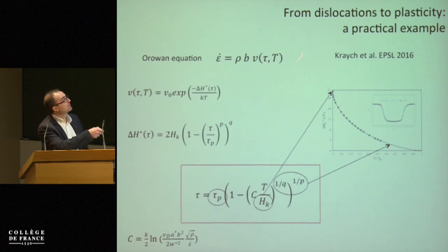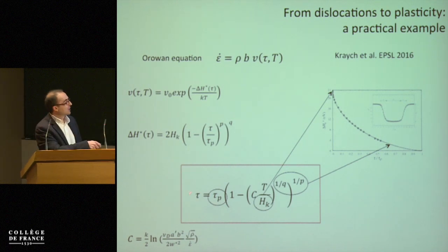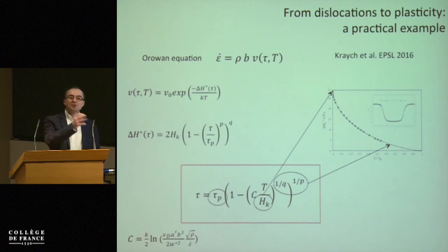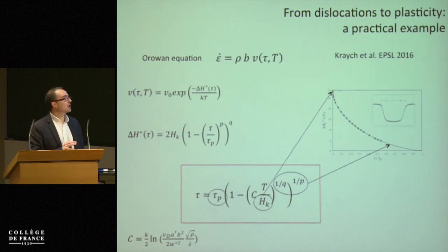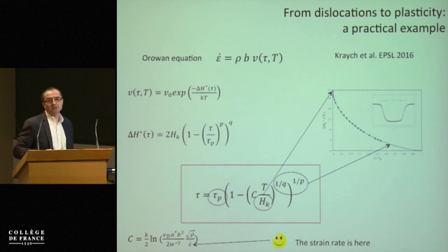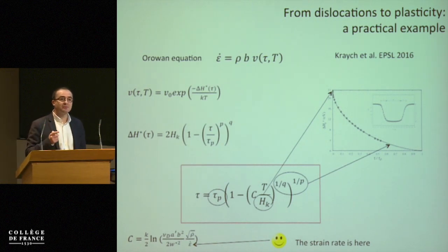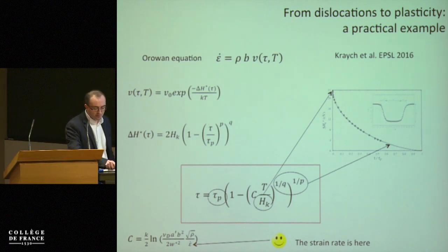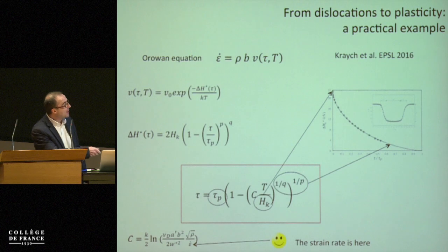If we plug the previous expression for velocity into this equation, we can reformulate it and extract the stress as a function of temperature. You end up with an expression for flow stress as a function of temperature, where all parameters come directly from atomistic calculations — there is no fitting parameter at all. Also, the strain rate is embedded in a constant C, so we can also say something about the effect of strain rate.